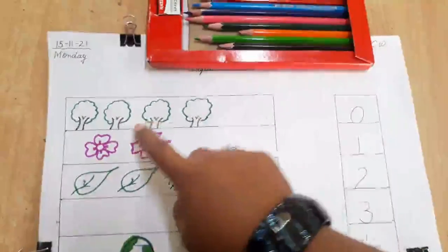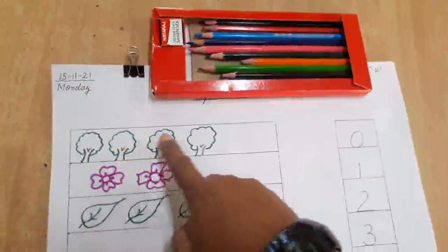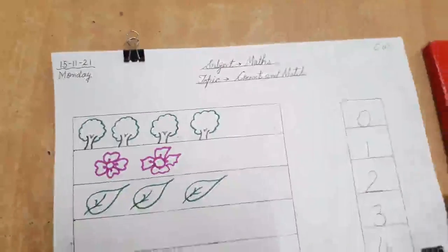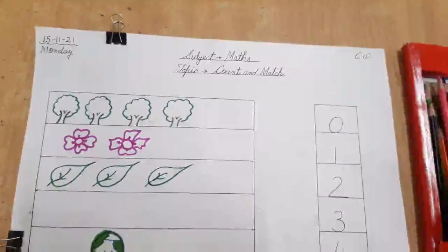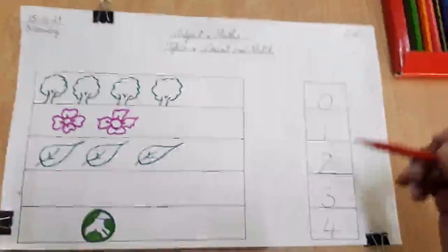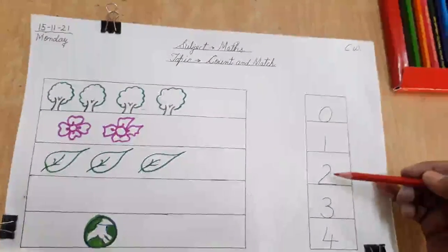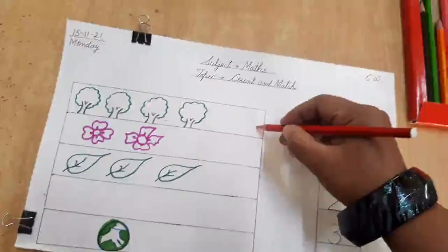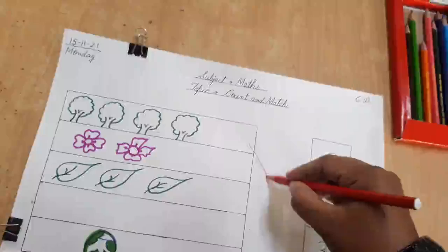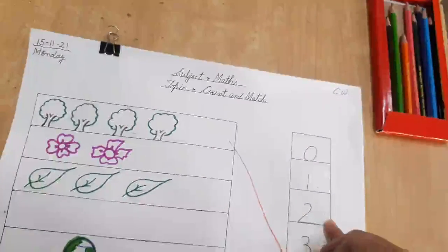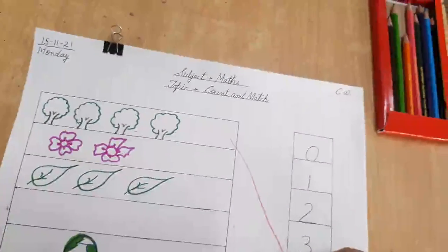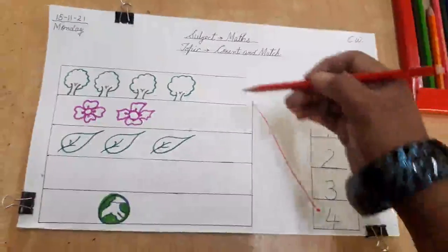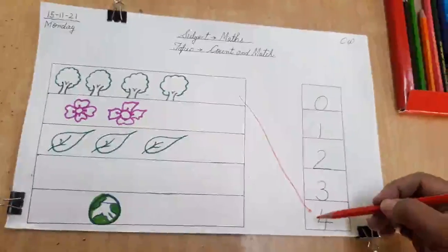In the first here, we are given 1, 2, 3, 4. We have 4 trees. So, just search for number 4. Where we can do the matching work? 0, 1, 2, 3, 4. So, here we have number 4. Let's match our 4 trees with number 4 like this. Clear everyone? This is how we have matched 4 trees with number 4.